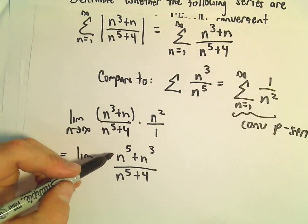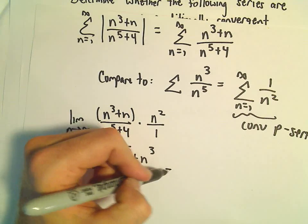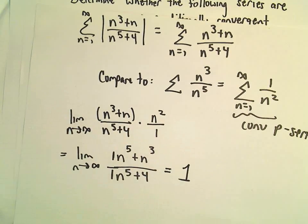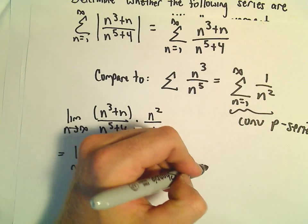The degree of the numerator equals the degree of the denominator. So the limit is going to equal the ratio of the coefficients. So this limit will just equal 1, a positive finite number. That means both series do the same thing.